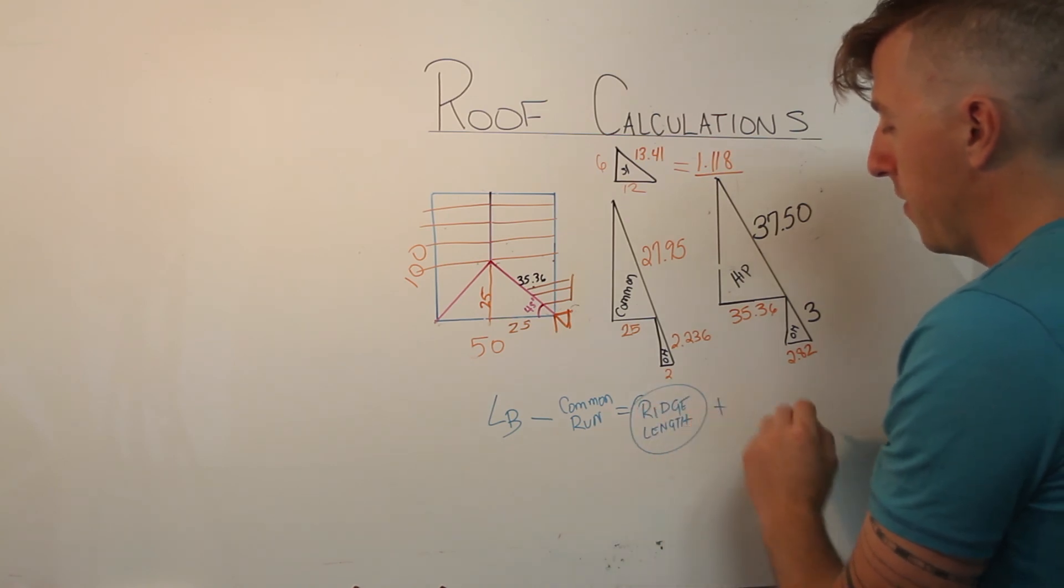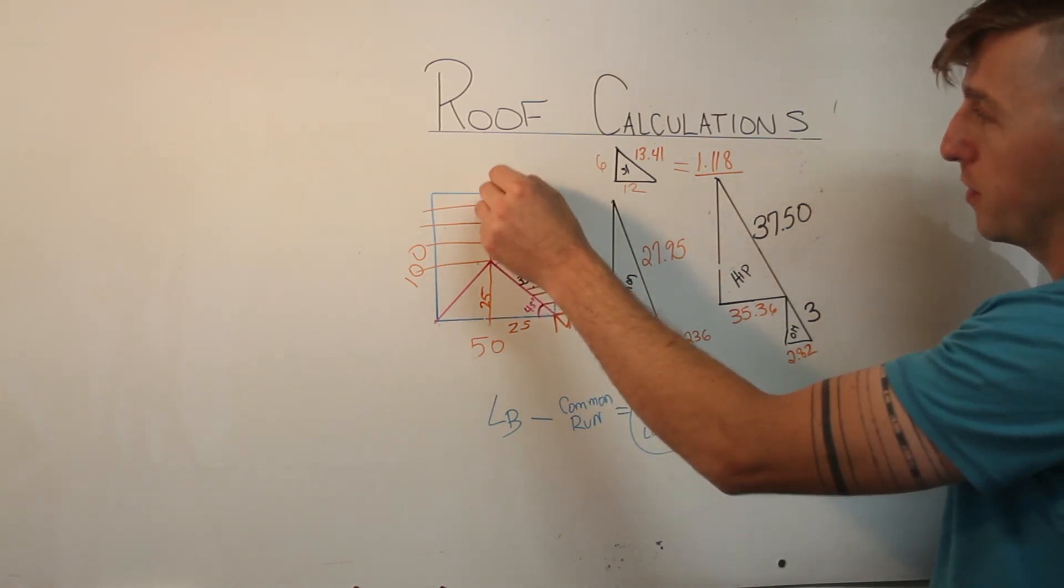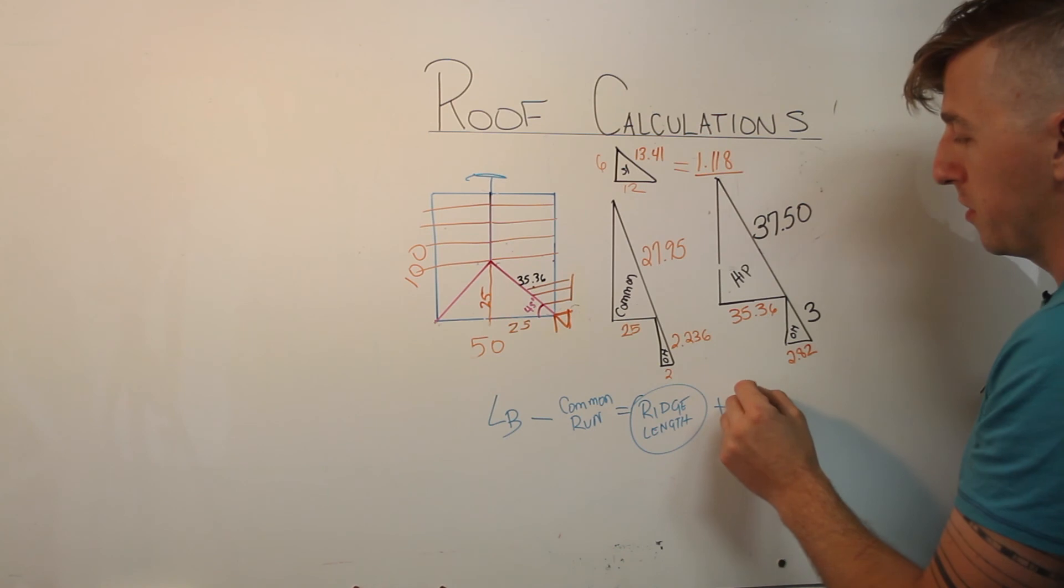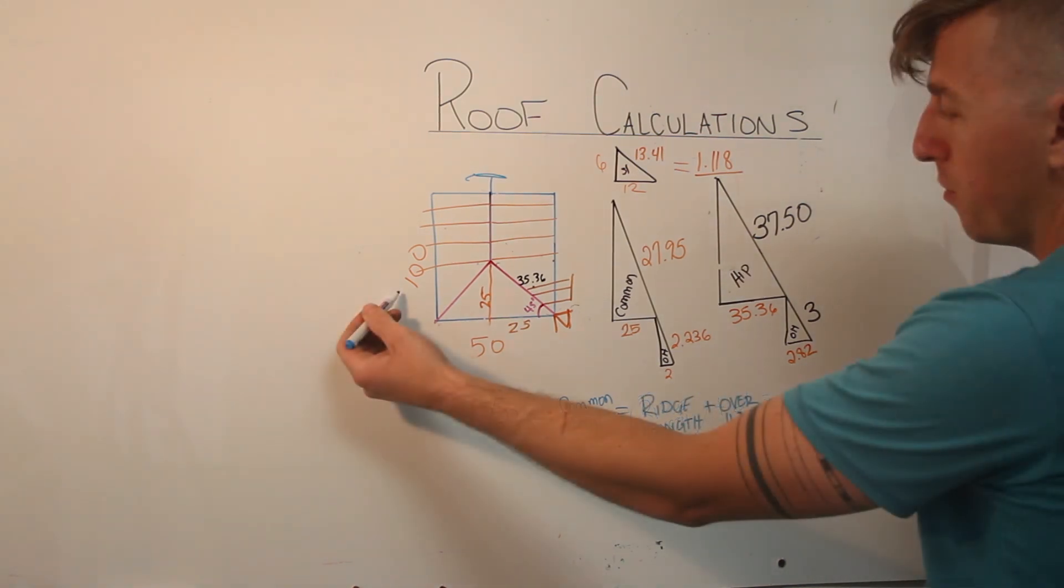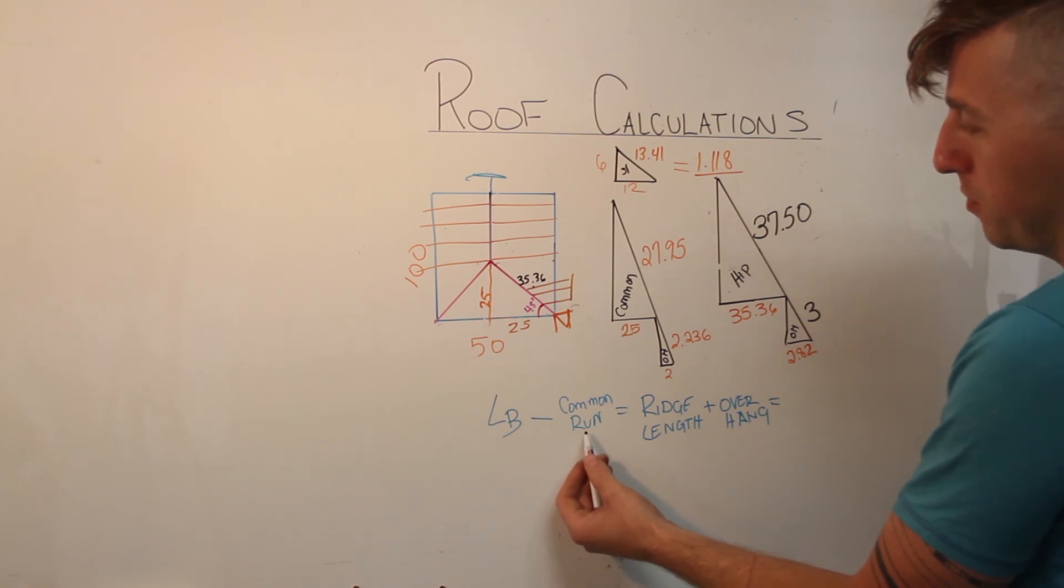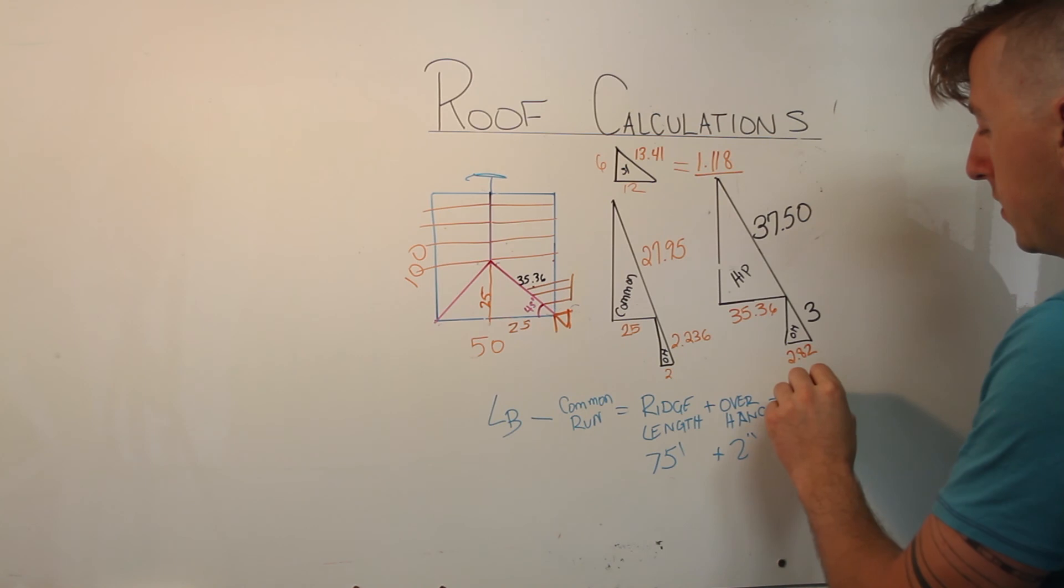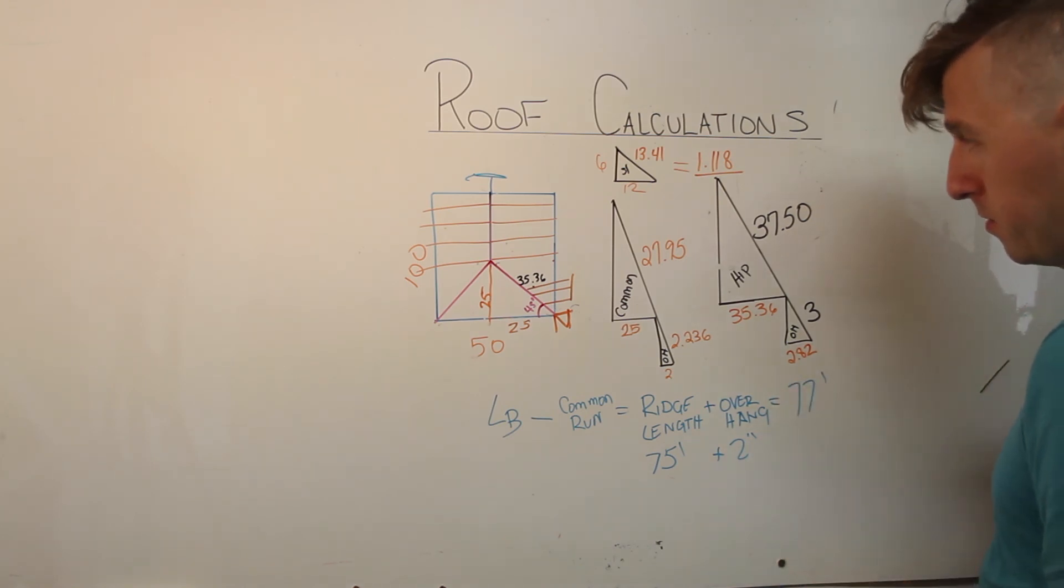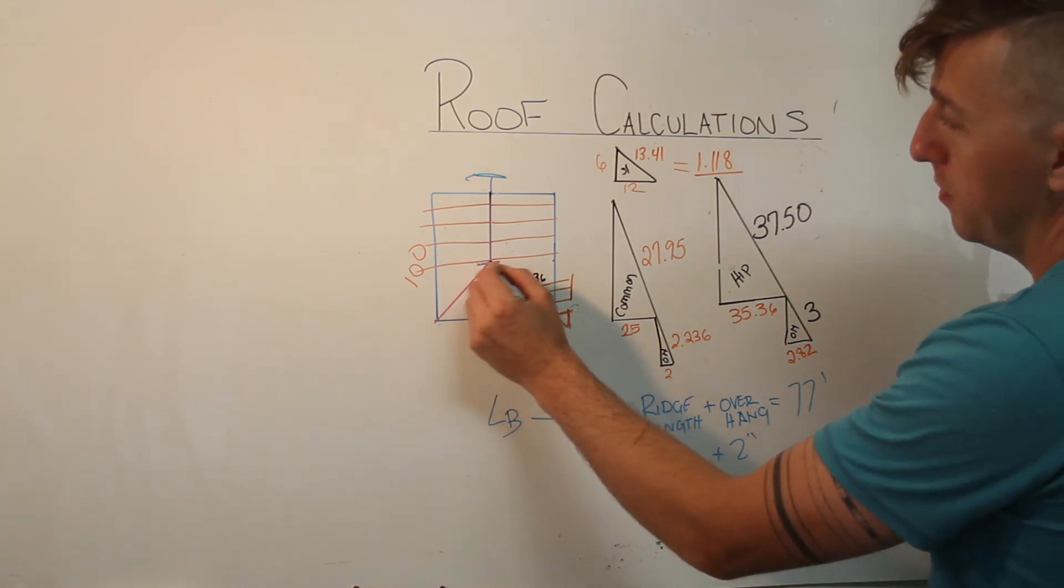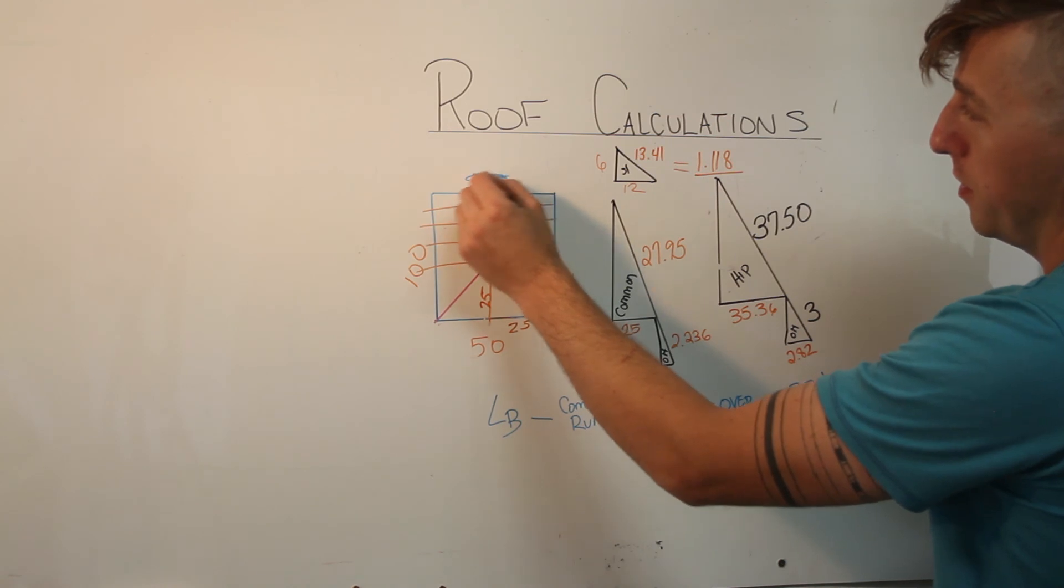You take that and you add that with your overhang, whatever your overhang is, which would be another 2 feet, and that is your ridge board. 100 feet minus 25 feet is 75 feet, plus 2 feet for your overhang, 77 foot ridge board. And that will take you from here, all the way out to here.